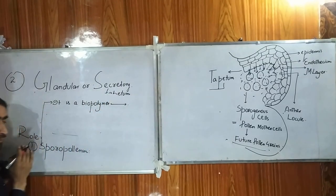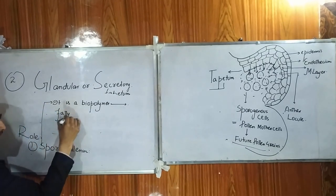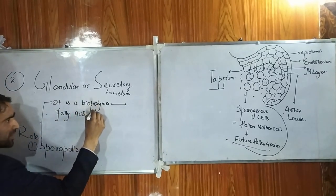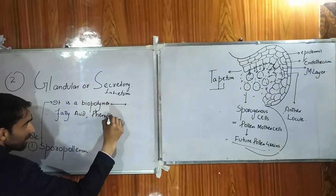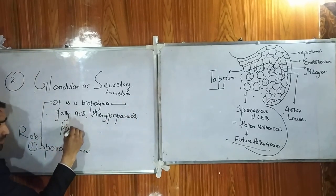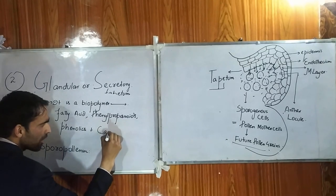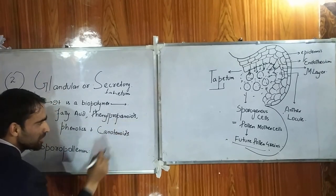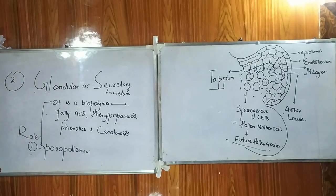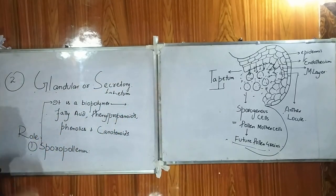Sporopollenin is a biopolymer composed of fatty acids, phenylpropanoids, phenolics, and traces of carotenoids. This special mixture forms a special biopolymer. The glandular tapetum secretes this material towards the pollen grains, and this material secreted from the glandular tapetum is called sporopollenin.